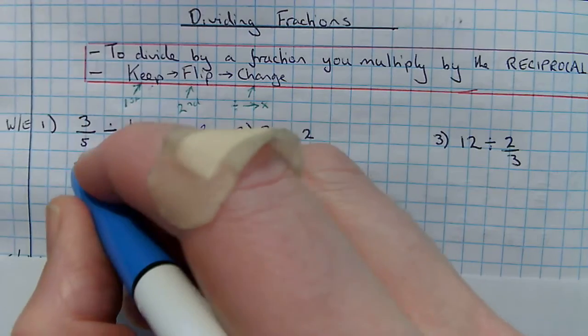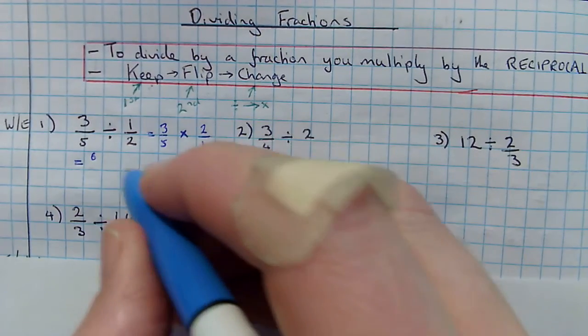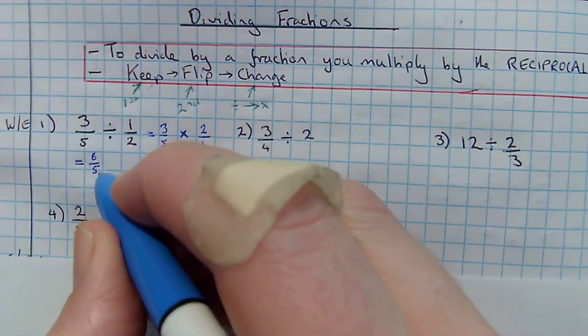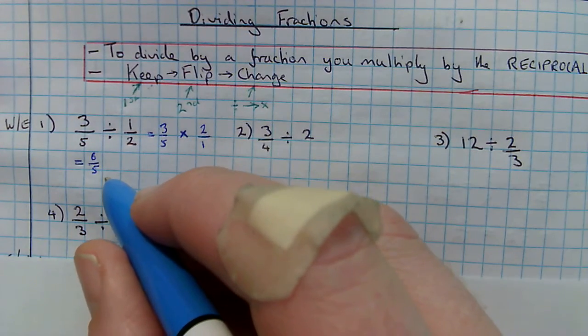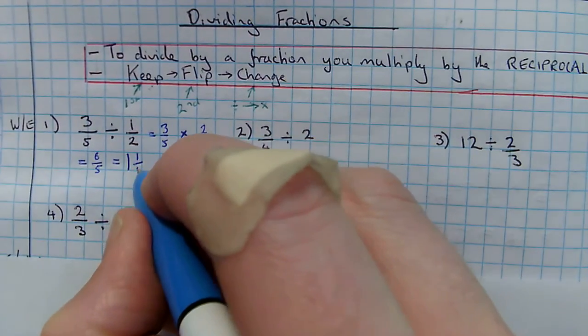3 times 2 gives me 6. 5 times 1 gives me 5. 6 out of 5. I've got a top-heavy fraction, so I need to convert it to a mixed number. 5 goes into 6 once. Remainder 1 gives me 1 and 1 fifth.